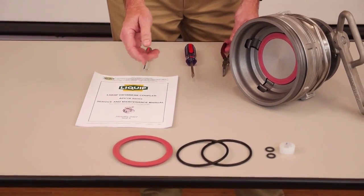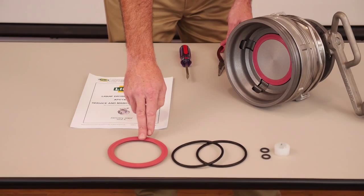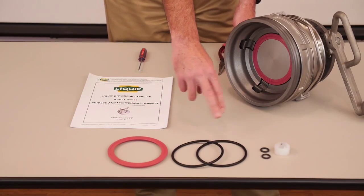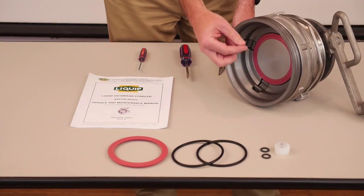And the seal kit's going to include everything you need. Your face seal, your inner and outer O-rings, your shaft seals, and some seal lubricant.